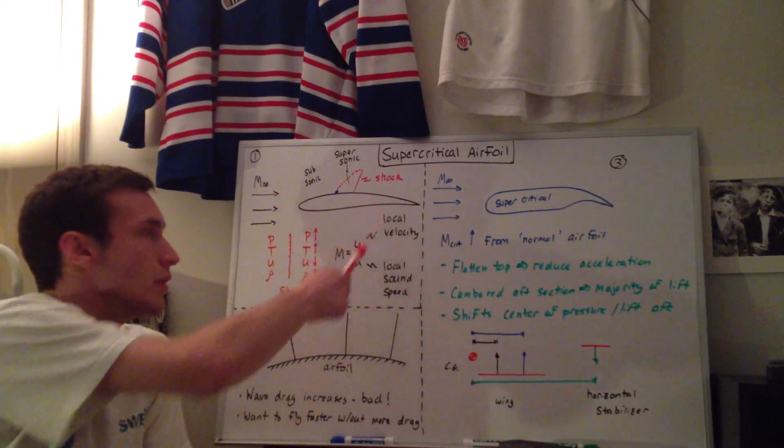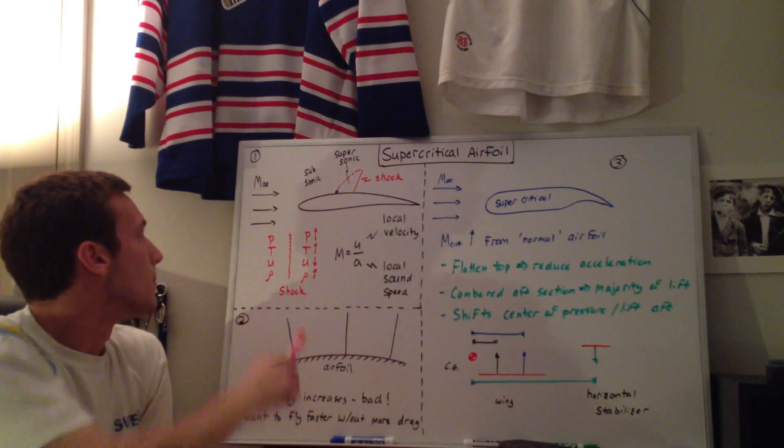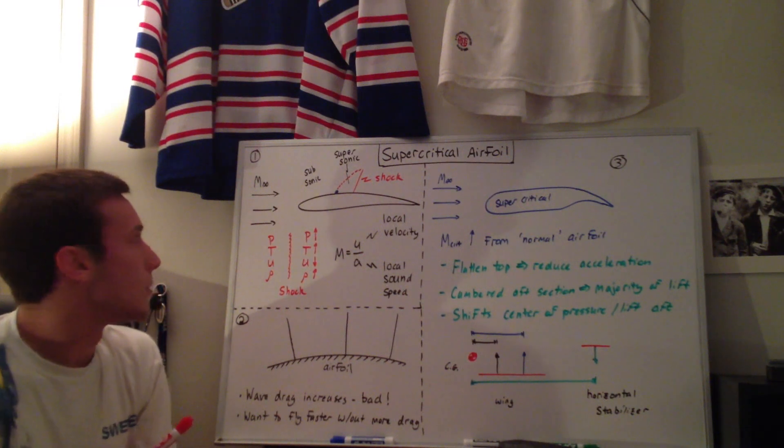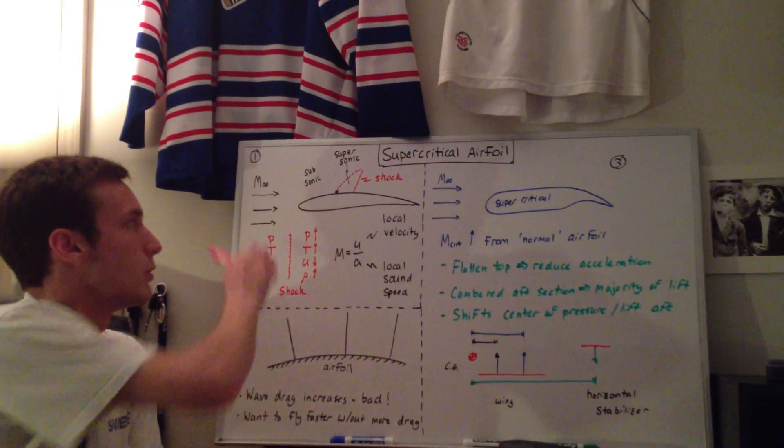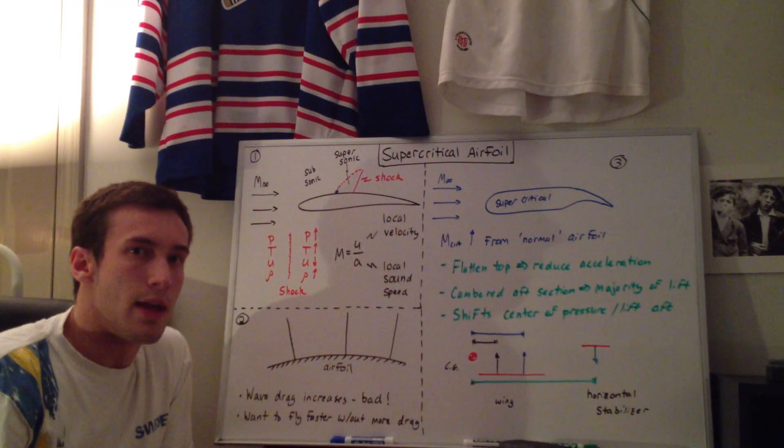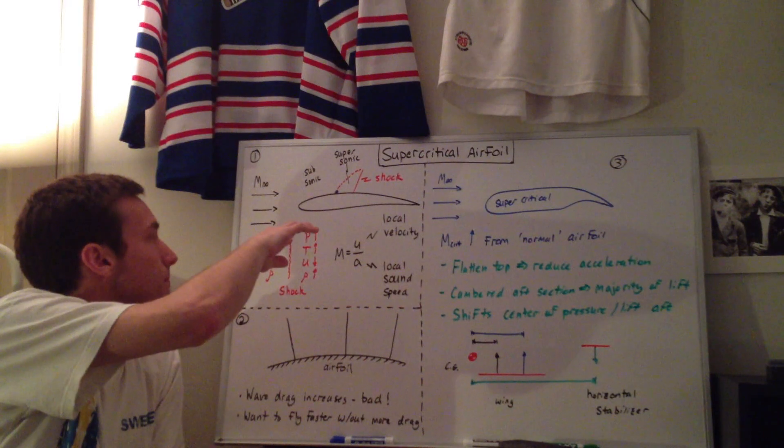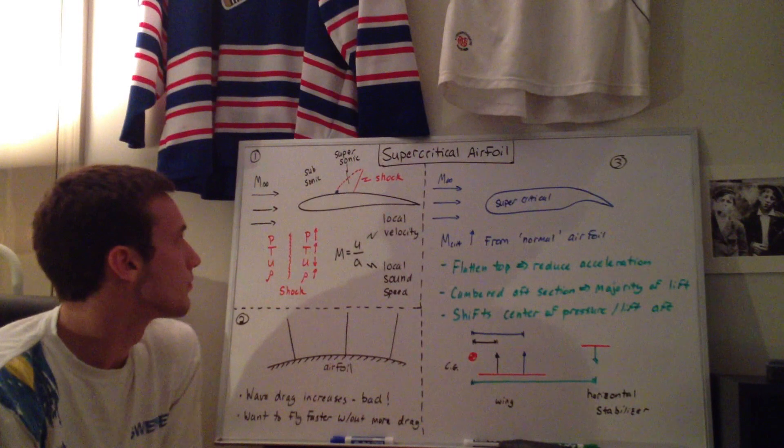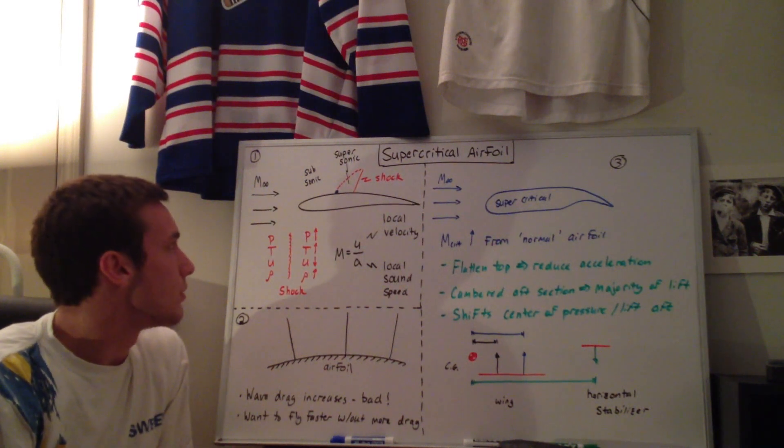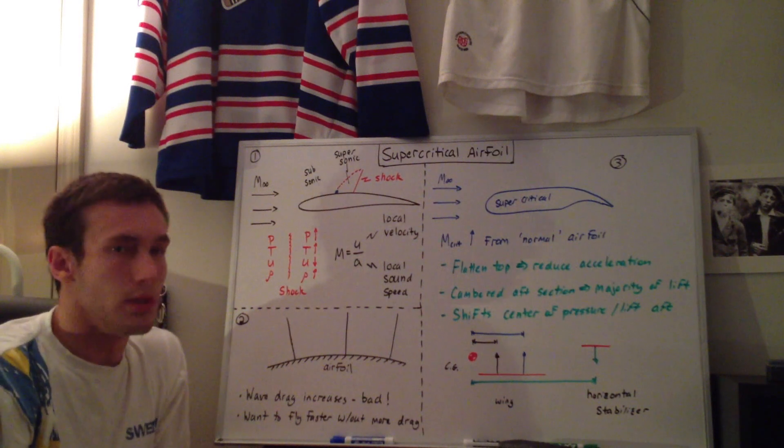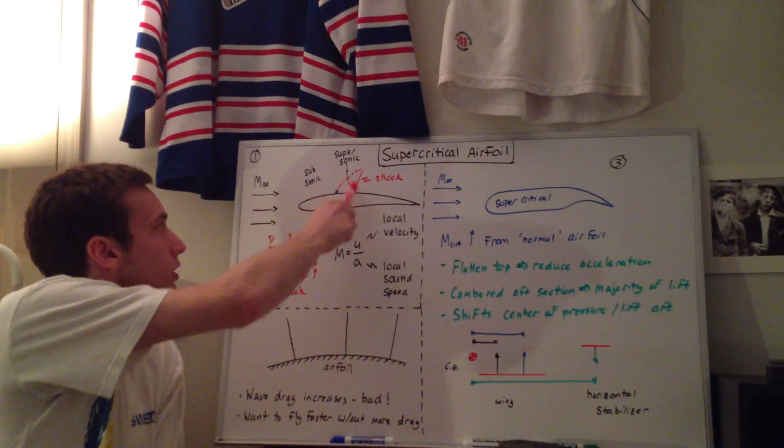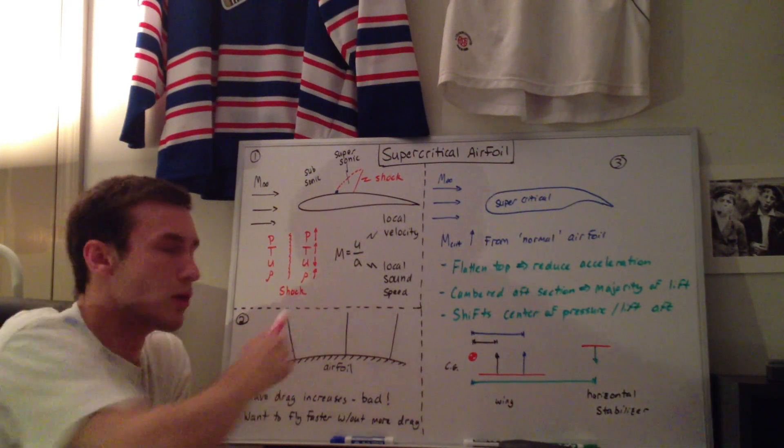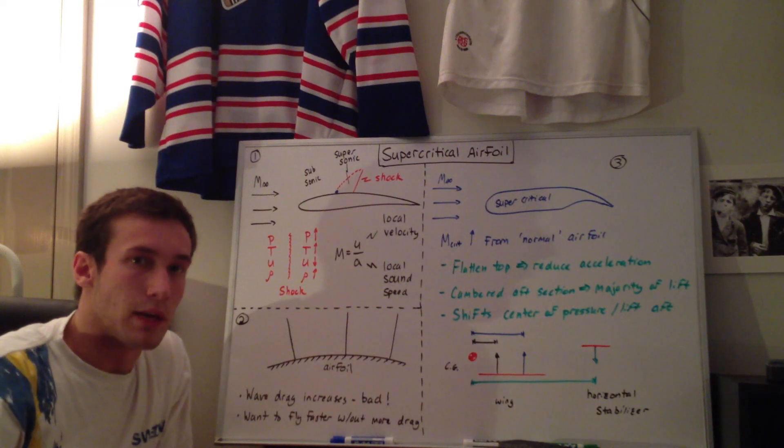Okay, so here is a general airfoil that you would have seen in my other video. We have the freestream Mach number, Mach infinity, and that's going to be subsonic. When we're flying at slow speeds, we just have flow over the wings. And then when the flow is flowing over an airfoil, it speeds up over this curved shape. And as it speeds up, even though the freestream Mach number can be below 1, the local speed over the top of the wing can increase to a point that's above the local speed of sound, at which point you would have a Mach number greater than 1.